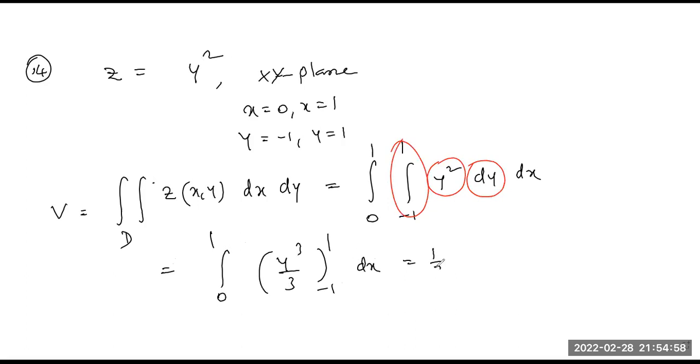So 1 by 3, integral 0 to 1, y cube evaluated from minus 1 to 1, dx. So 1 by 3 integral 0 to 1, y cube at 1 minus y cube at minus 1, dx equals 1 by 3 integral 0 to 1, 2 dx.